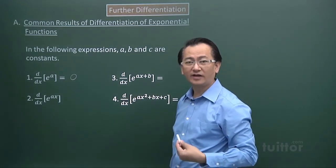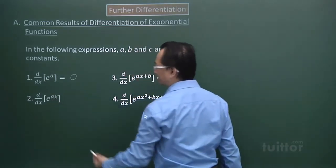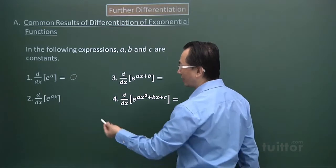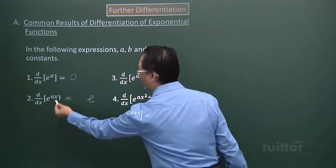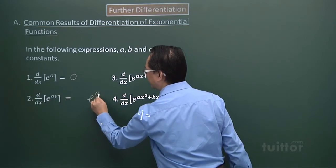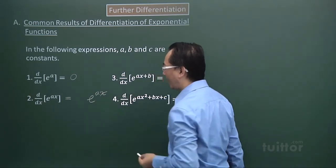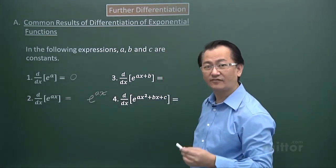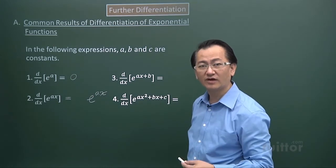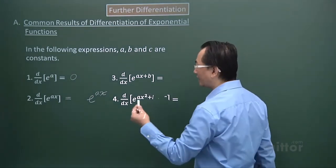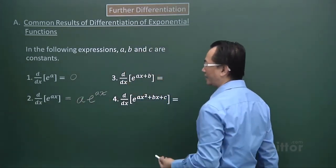Part two: the expression is e to the power of Ax, where x is a variable. When I differentiate an expression like that, I will rewrite what I have here. Then I focus on the expression of the index, which is Ax. If I differentiate that, because it is an x term, I will get the coefficient of that x term, which is A. So that A will be a multiplier to what I have written beforehand: e to the power of Ax.